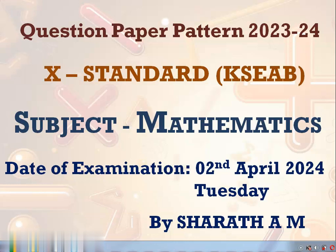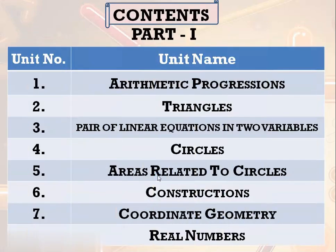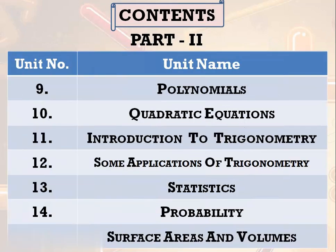What are all the chapters we have discussed in 10th standard? We have gone through 2 textbooks for mathematics — mathematics part 1 and mathematics part 2. We have come across 8 chapters in part 1, starting from arithmetic progression up to real numbers. And also another 7 chapters in part 2. So all these 15 chapters are divided into 7 branches.